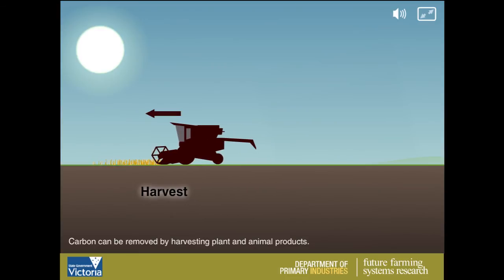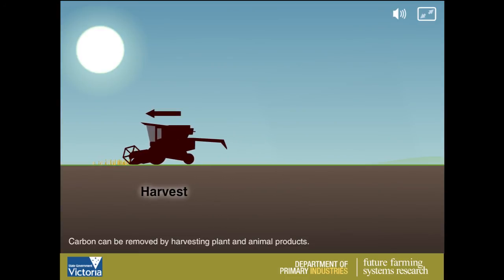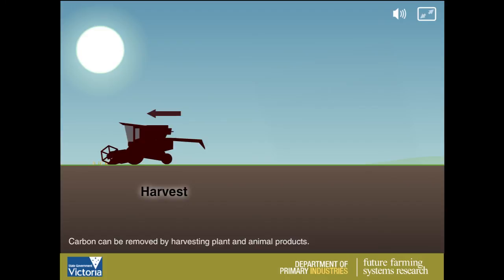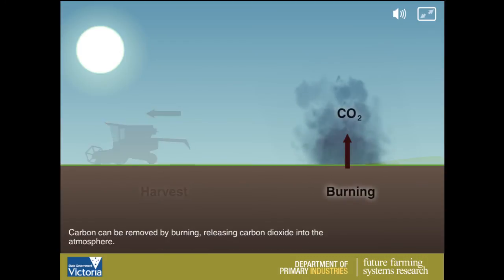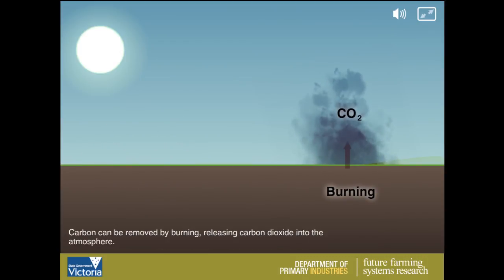Carbon can be removed by harvesting plant and animal products. Carbon can also be removed by burning, releasing carbon dioxide into the atmosphere.